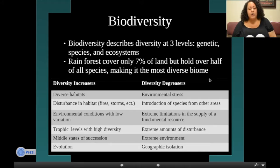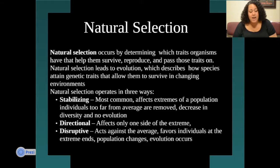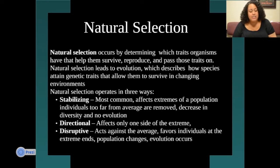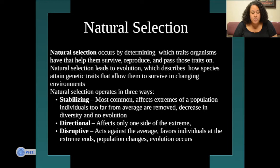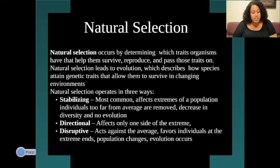Natural selection occurs by determining which traits help organisms survive, reproduce, and pass on those traits. It leads to evolution, which describes how species attain genetic traits that allow them to survive in changing environments. Natural selection operates in three main ways: stabilizing, directional, and disruptive. Stabilizing is the most common — it affects the most extreme individuals of the population, removes those too far from the average, decreasing diversity with no evolution. Directional affects only one side of the extreme, while disruptive acts against the average and favors individuals at extreme ends of the population, leading to evolutionary change.